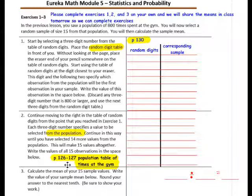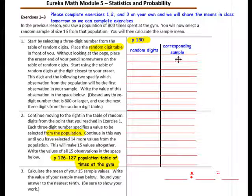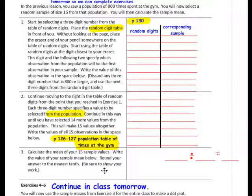Once you have that done, turn to page 126 in your book and look up each number in the population table of time at the gym. Find your first random number in the population table, write the corresponding time value, then find your second random digit, find it in the population table, and write the corresponding number. Continue that until you have all 15 numbers from the population. Then calculate the mean of your 15 sample values and round your answer to the nearest tenth.